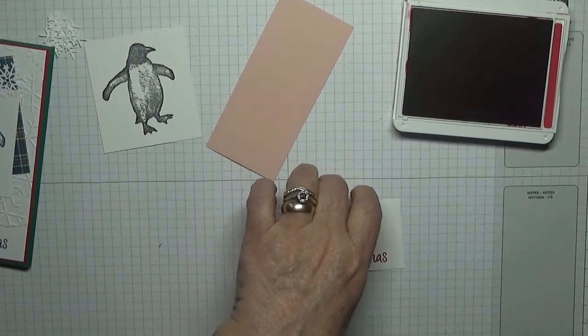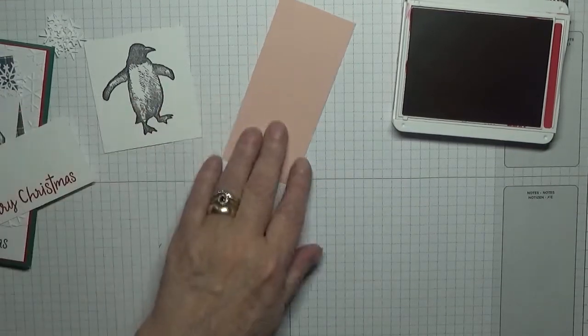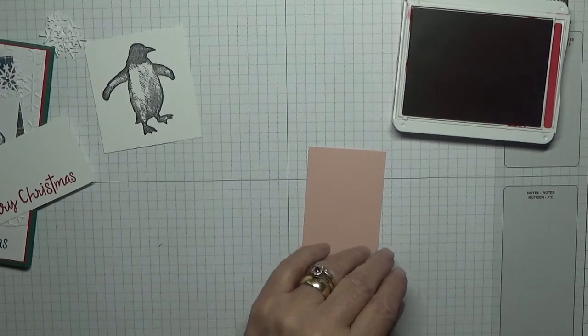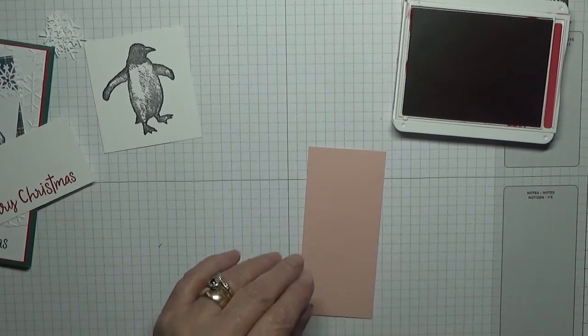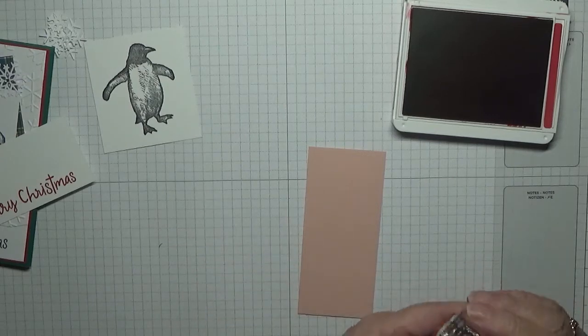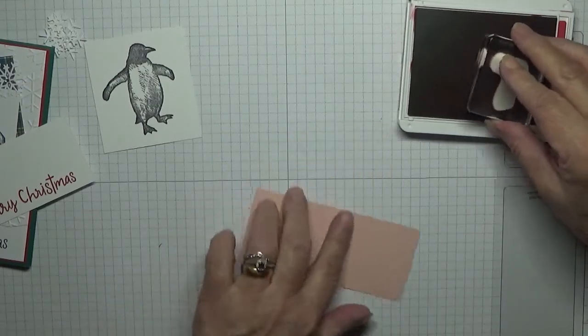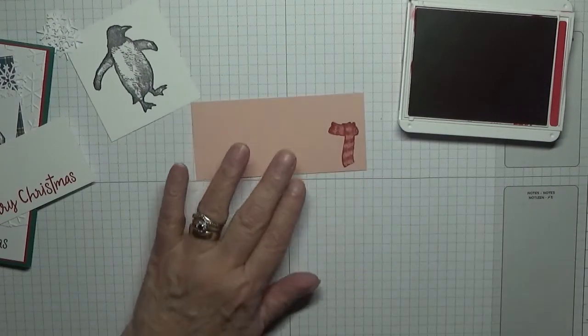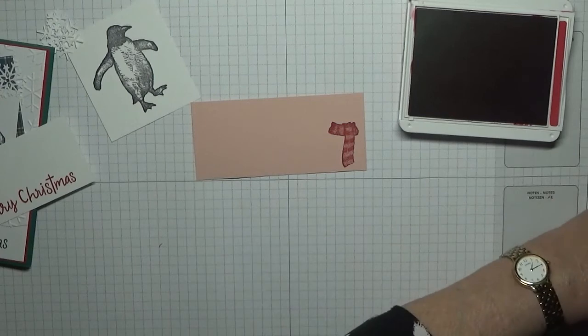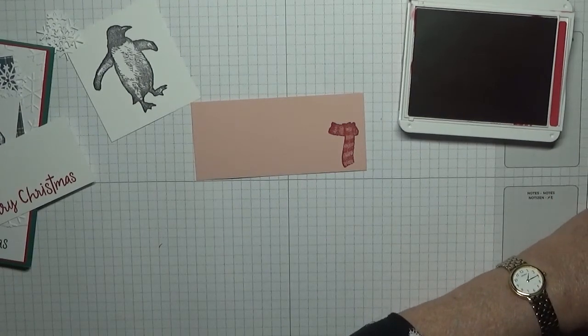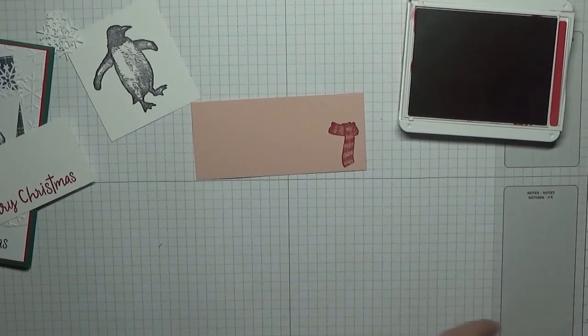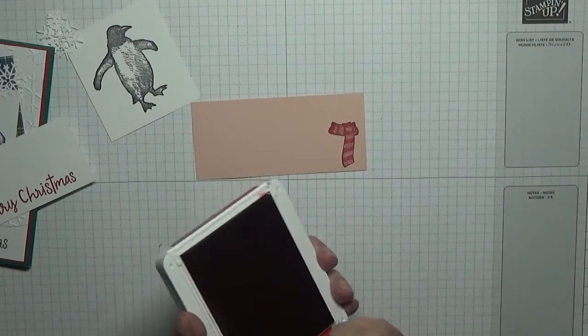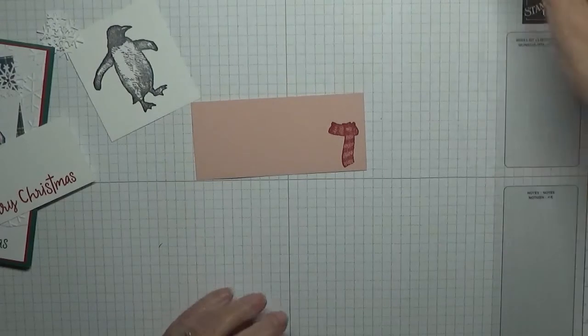The stamp is stained, all right. And then I want the scarf, which I'm going to stamp in Real Red on this Blushing Bride card like that. And that is our stamping done, all right.